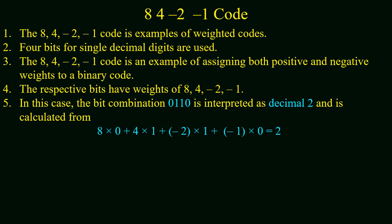The next binary code we will study is 84-2-1 code, which is also an example of weighted code. Here also 4 bits are used to represent a single decimal digit. The 84-2-1 is an example of assigning both positive and negative weights to a binary code. In this code, any decimal number is represented by 4 bits where the weighting factors are 8, 4, -2, -1 starting from the least significant bit.